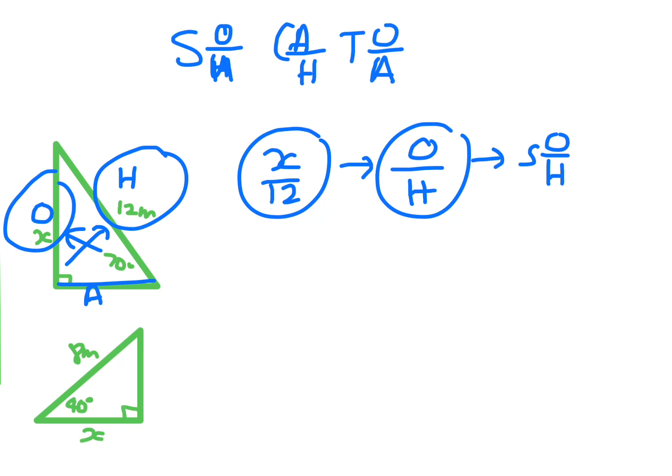So that means it means it is sine. So you go sine of the angle. Make sure that you set it up is opposite on hypotenuse. So it is sine. Sine of the angle. The angle is 70 degrees.